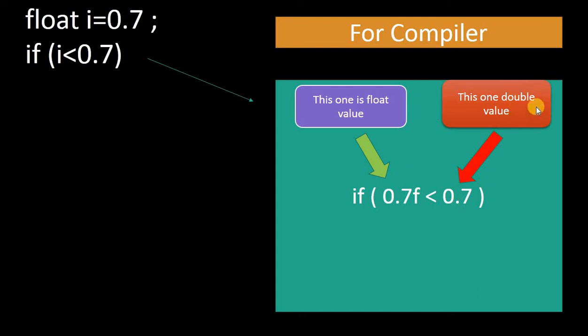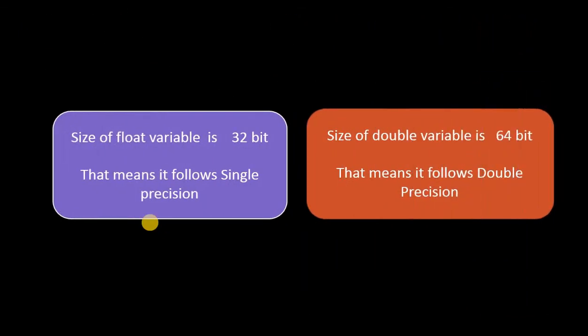So what is the difference between float and double? Let's see. The size of the float variable is 32 bit, that means it follows the single precision. And the size of the double variable is 64 bit, that means it follows the double precision.